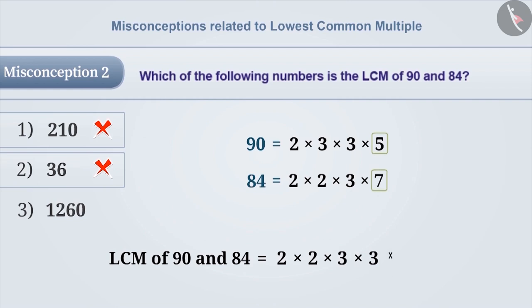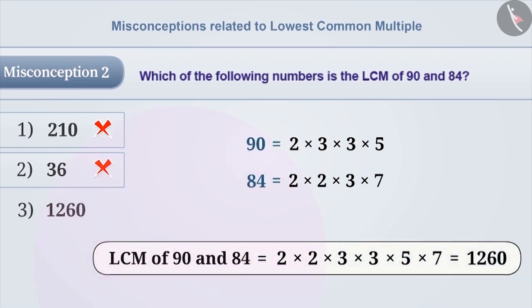Also, 5 and 7 have occurred only once. So, we will place them in the product. Hence, the LCM of 90 and 84 is 1260, which is option 3.